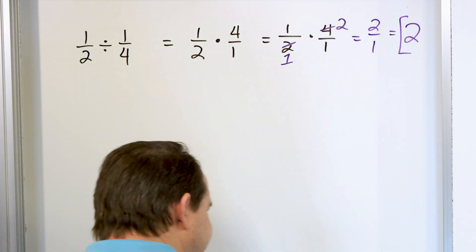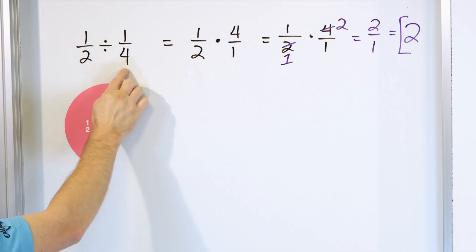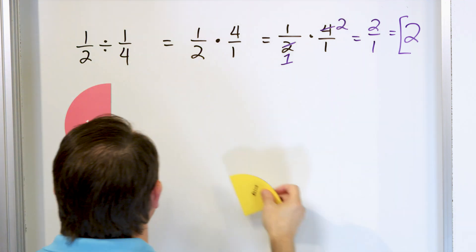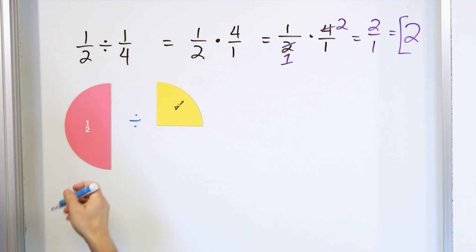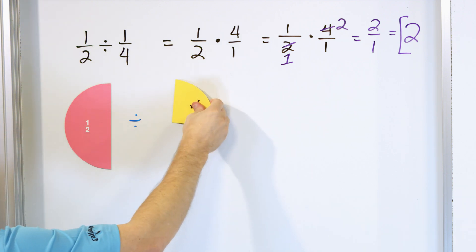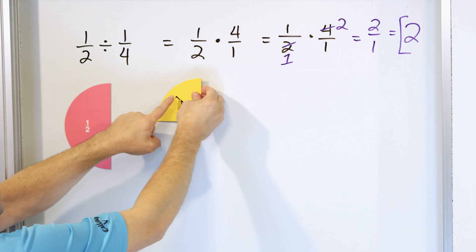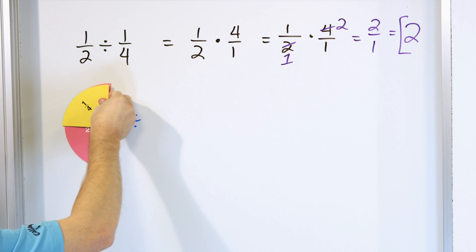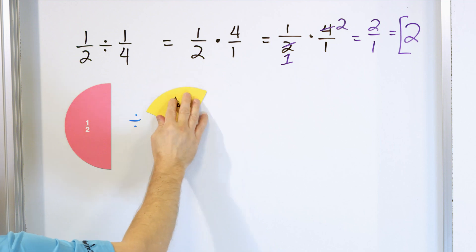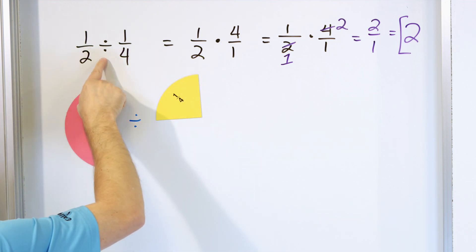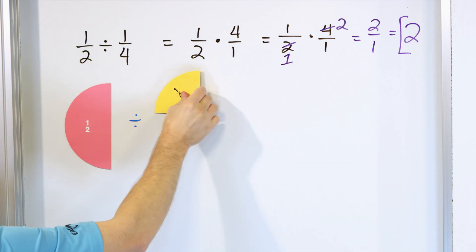What does this mean? Here we have one-half of a pizza — this is how much pizza one-half is — and we're dividing by one-fourth. When we divide, what we're really asking is: how many times can this thing fit inside of this? You can see that if you have this much pizza divided by this much, how many times will it fit? One whole time, two whole times. That's why it comes out to an answer of two.